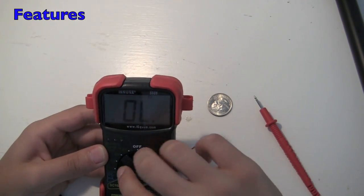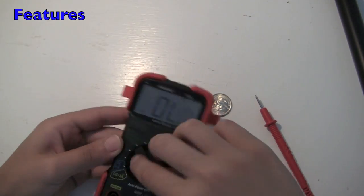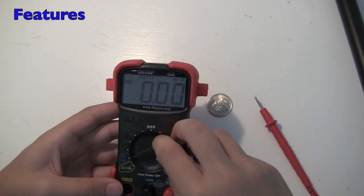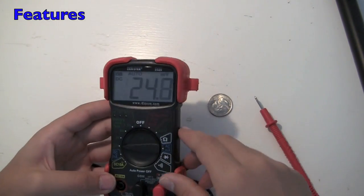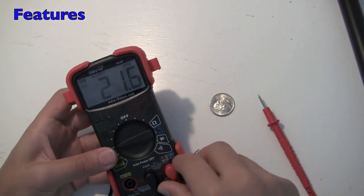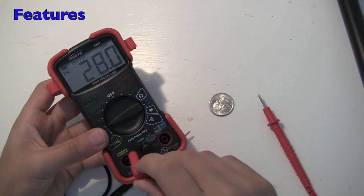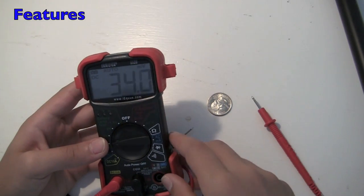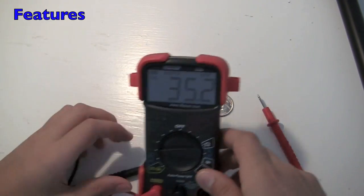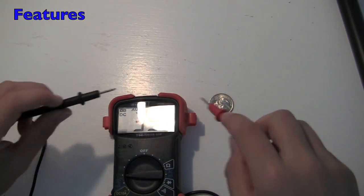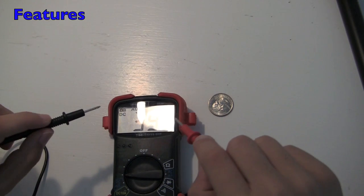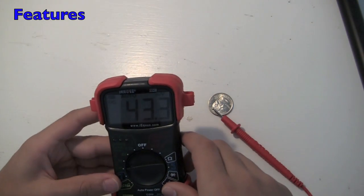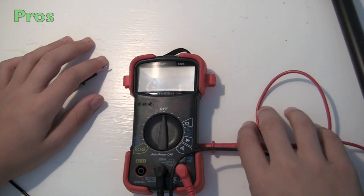It also can measure DC ampage and milliamps too for a more precise reading. And you can also put this over here if you want to measure really high amperage, like up to 10 amps. But warning, you can only hold it on the high voltage for about 15 seconds every 15 minutes, or else you'll mess up your multimeter.